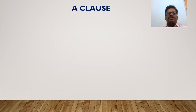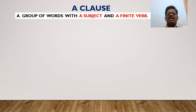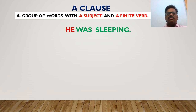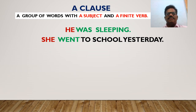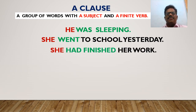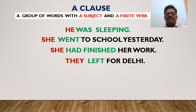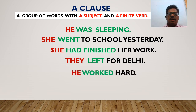Before understanding the relationship between conjunctions and clauses, let us first see the meaning of a clause. A clause is a group of words which has a subject and a finite verb. Look at these groups of words: 'he was sleeping,' 'she went to school yesterday,' 'she had finished her work,' 'they left for Delhi,' 'he worked hard.' All these groups of words are called clauses because they have subjects and finite verbs.